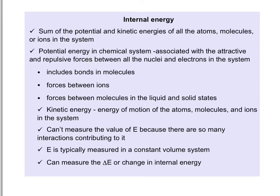The internal energy of a chemical system is the sum of all the potential and kinetic energies of all that makes up the system, and that includes atoms, molecules, and ions. The potential energy in a chemical system is associated with those attractive and repulsive forces between all the nuclei of the atoms and the electrons in that chemical system.